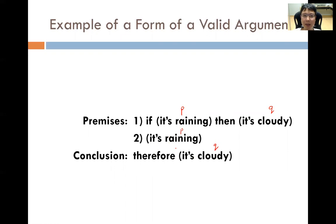Let us look at this argument to decide whether it is sound or not. If it is raining, then it is cloudy — I hope we all agree this is true, since if there are no clouds, it cannot rain. Premise 2 is more subjective. If you look outside your window and it is raining, then P is true, and on a day whereby it is raining, we must agree the conclusion that it is also a cloudy day.